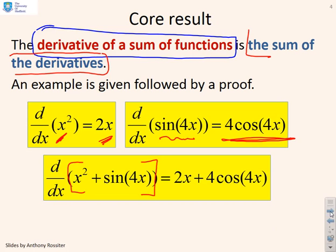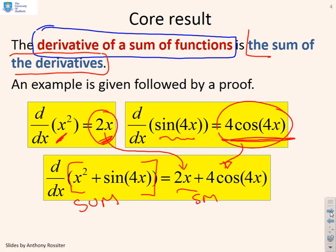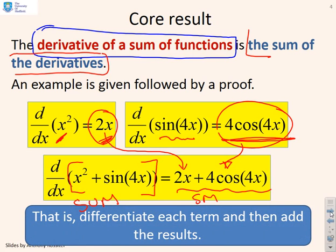...then the derivative is simply the derivative of x squared added to the derivative of sin(4x). So you can see the derivative of a sum - here I've got the sum of two functions is the sum of the derivatives. So all you need to do is differentiate each term in turn and add the results.